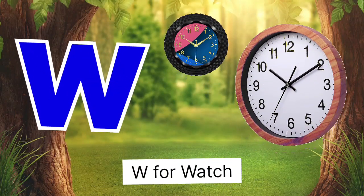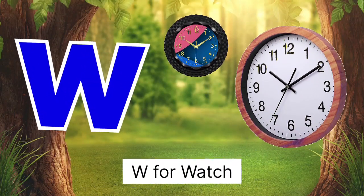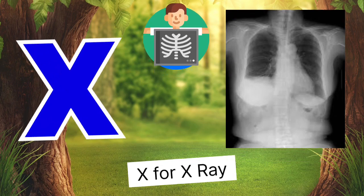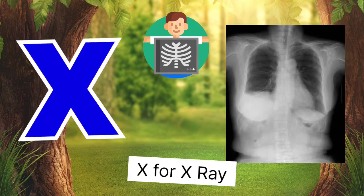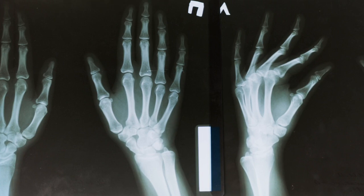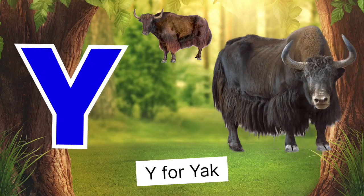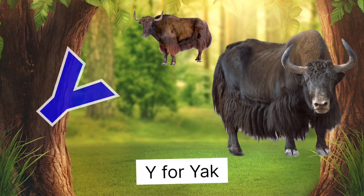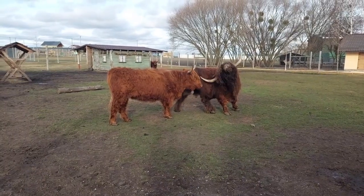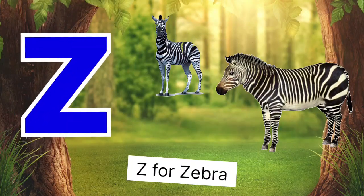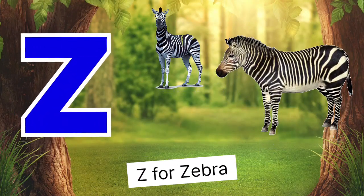W for watch, watch means gauri. X for x-ray, x-ray means x-ray. Y for yak, yak means ray. Z for zebra, zebra means zebra.